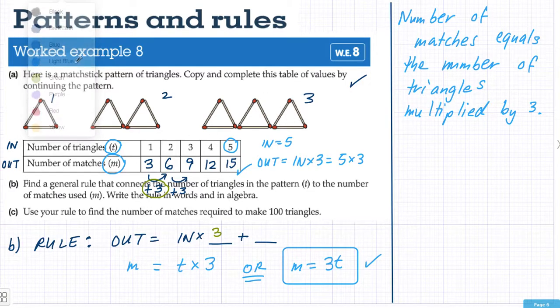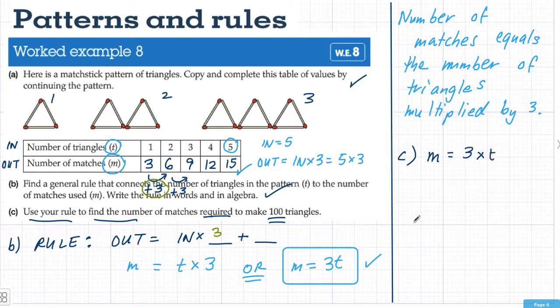Now the last part of this question is part C. We've done part B. Part C says use your rule to find the number of matches. So that means we need to find the number of matches if you have 100 triangles. Remember that our rule was three times T or 3T. Now in this case we actually have T equals 100.